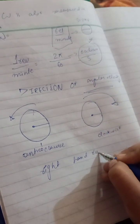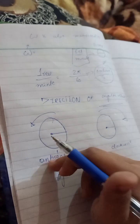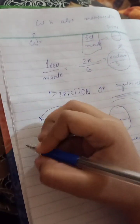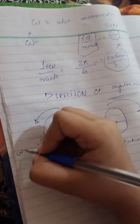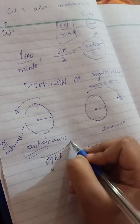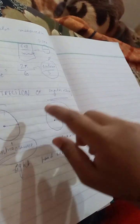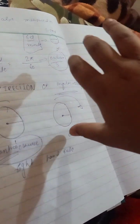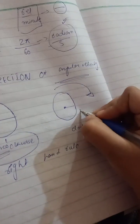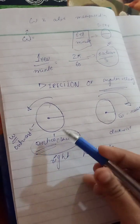Using the right-hand rule: curl the fingers of your right hand in the direction of rotation. For anticlockwise rotation, the thumb points outward — so the angular velocity is directed outward. For clockwise rotation, the thumb points inward — so the angular velocity is directed inward.